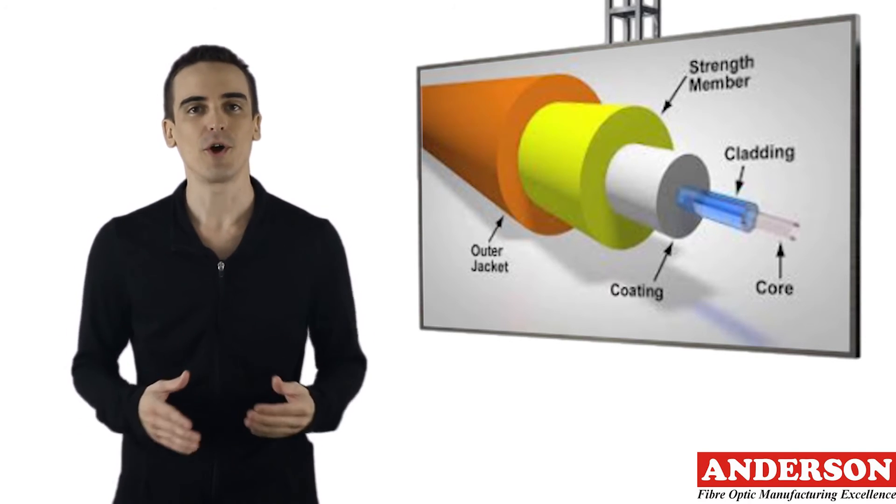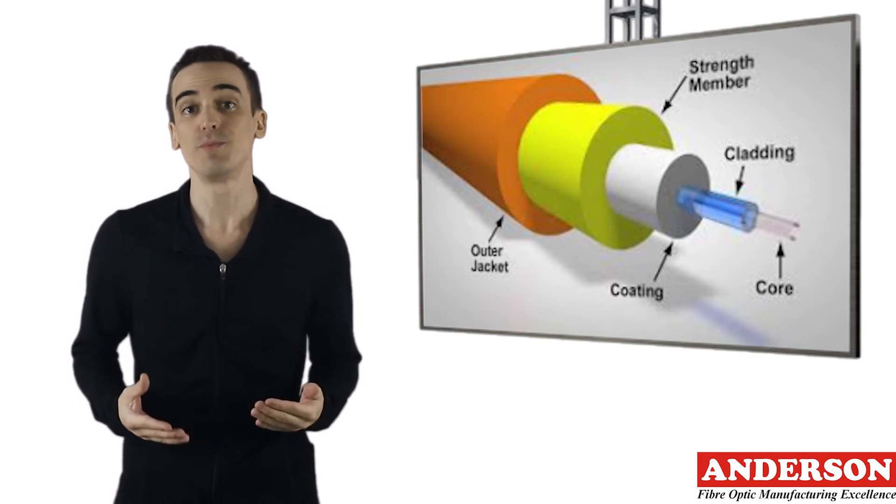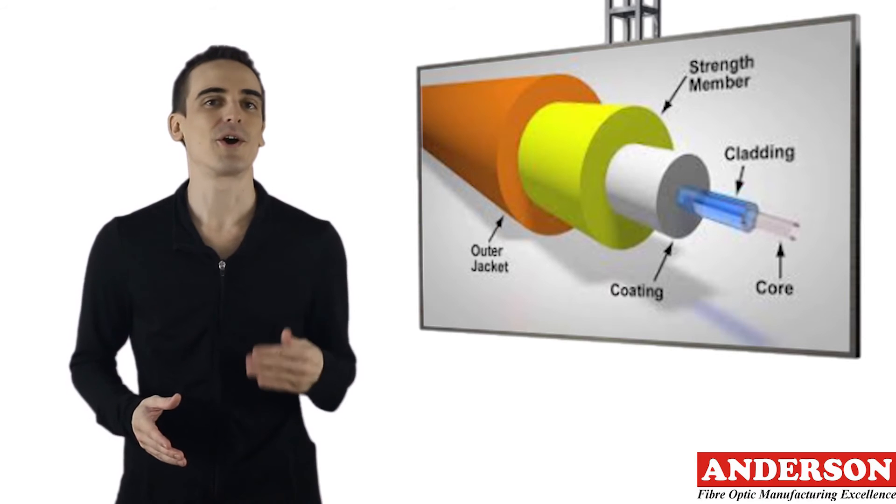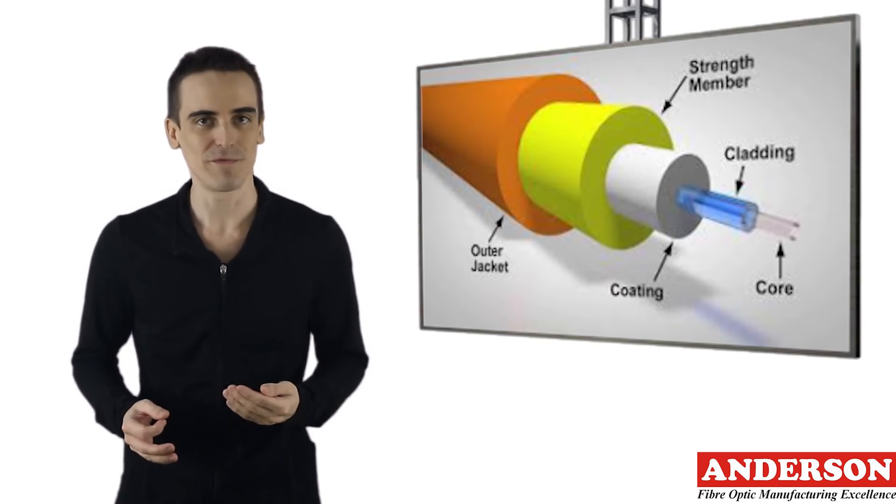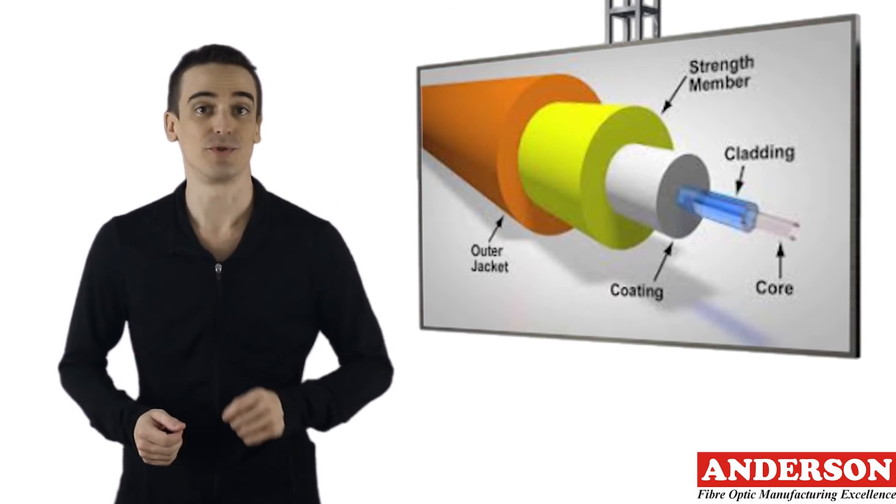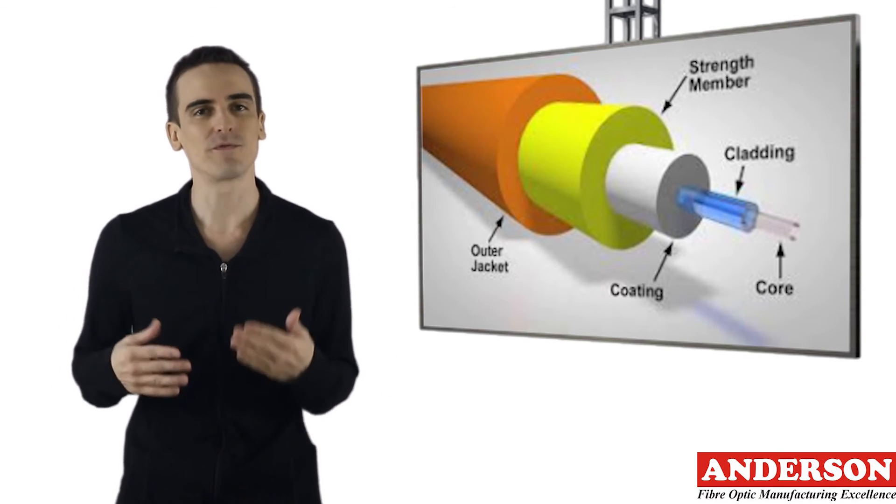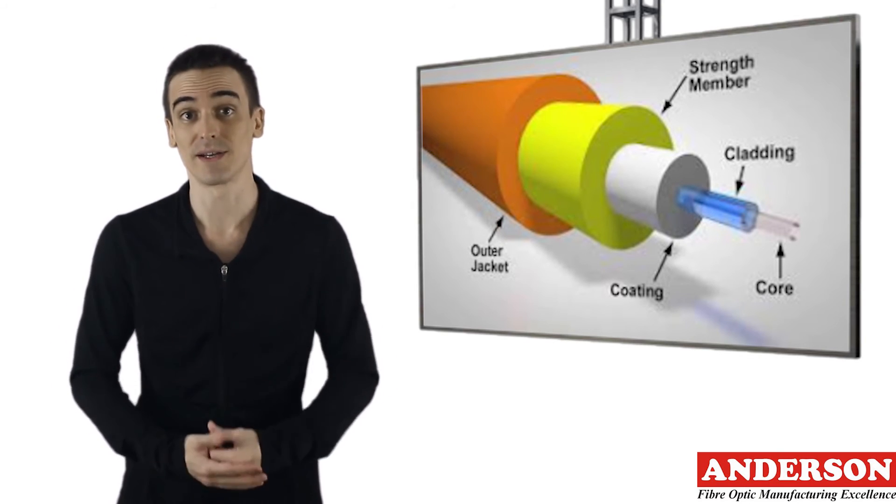You will most commonly find that the coating on fibers within a loose tube cable construction is 250 microns, whereas the coating on fibers within a tight buffered cable construction is 900 microns. The material of buffer coating is usually soft or hard plastic, such as acrylic or nylon.